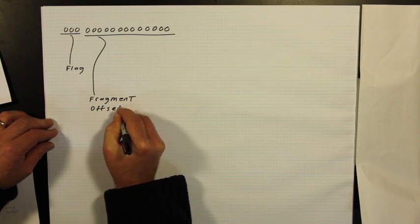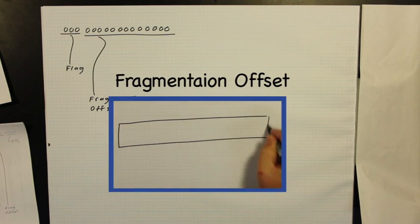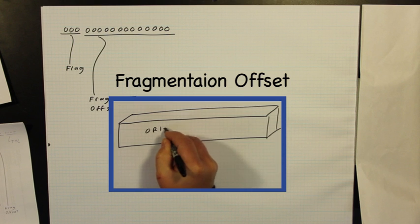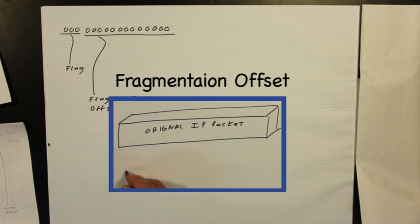When an IP packet is fragmented, the next 13 bits indicate the distance, in 8-bit words, this packet is offset from the beginning of the original, unfragmented packet.